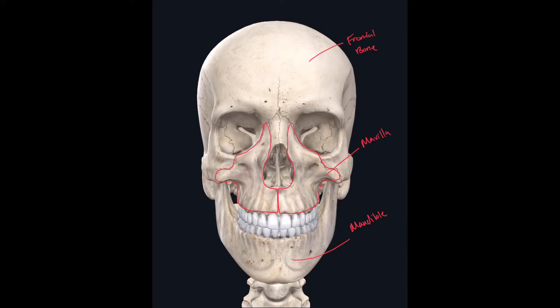Right above what we would call the nose, we have two small bones right where the bridge of the nose would be. These paired bones are called nasal bones. Moving on, we have another bone found here — in layman's terms we call it our cheekbone — but this bone and its paired one on the other side are called zygomatic bones.